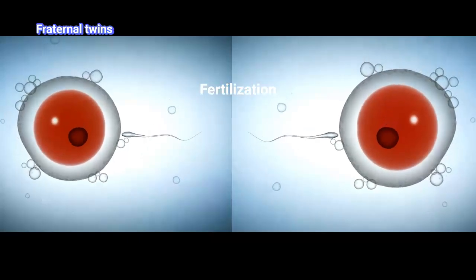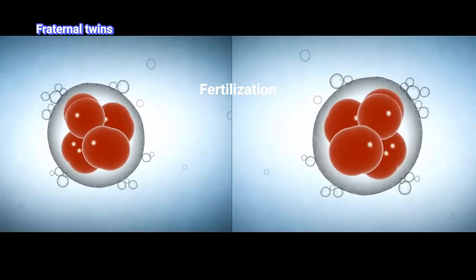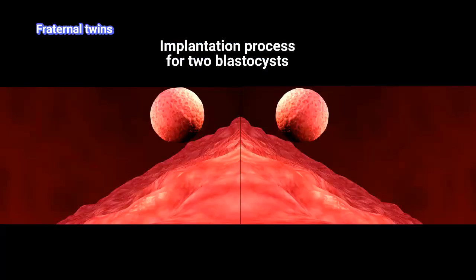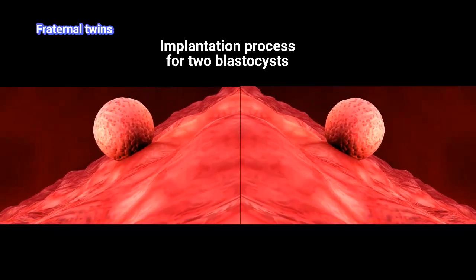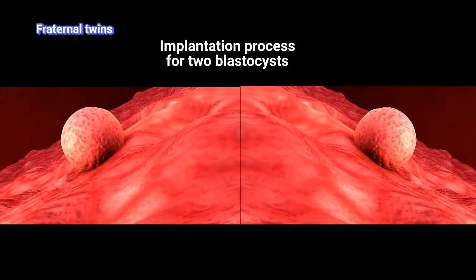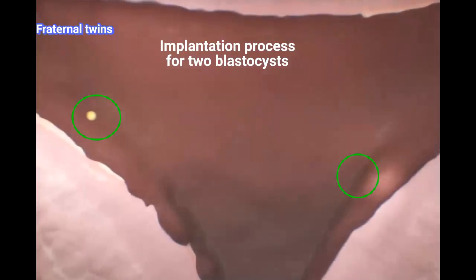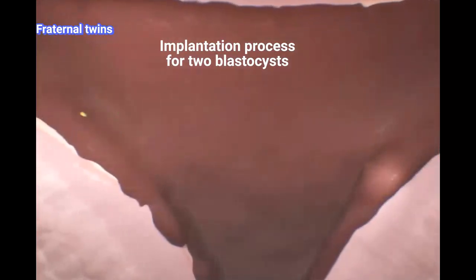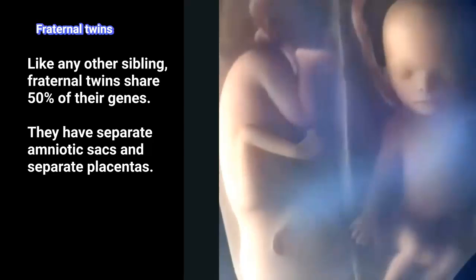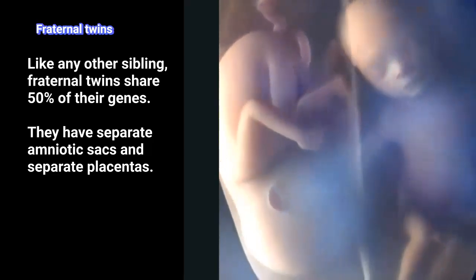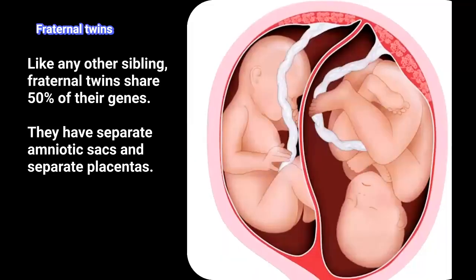Each egg is fertilized by a separate sperm, forming two zygotes, which turn into two distinct blastocysts. The two blastocysts travel down the fallopian tube toward the uterus. Each blastocyst implants itself into the uterus lining in separate locations. After implantation in separate spots in the endometrial lining, each blastocyst develops into a distinct twin. Like any other siblings, these twins share 50% of their genes.